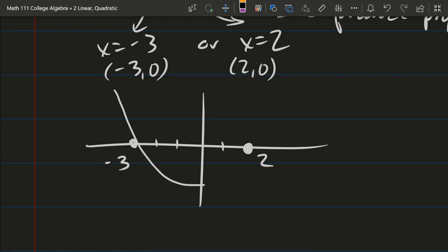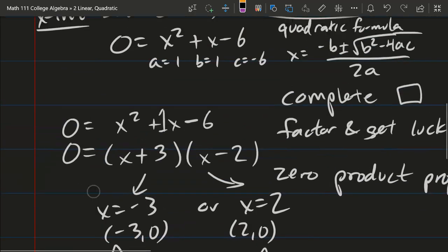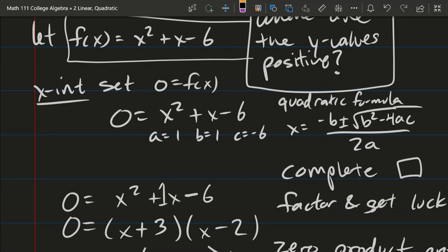I'm about to graph our function and I want to know when are the y values positive. Our actual function's right here, so let's go ahead and graph that. We spent time on the intercepts, it's a happy parabola, and that's enough information to get a decent graph.